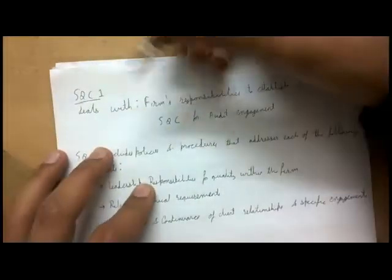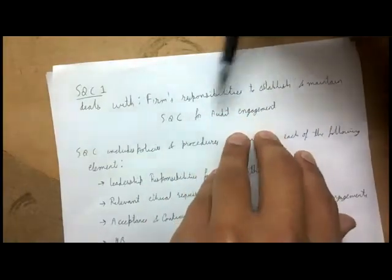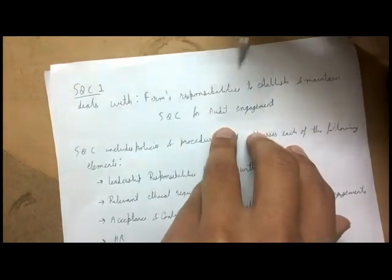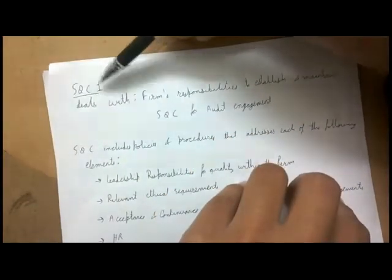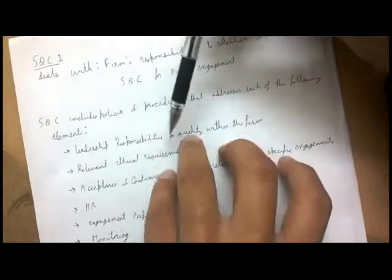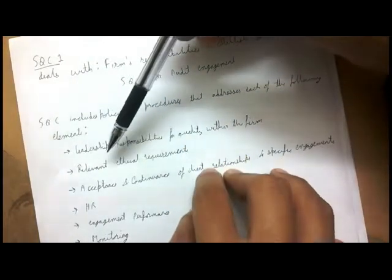Moving on to the system of quality control: it deals with the firm's responsibility to establish and maintain a system of quality control for audit engagements. It was the firm's responsibility to establish and maintain this system. It includes policies and procedures that address each of the following elements: leadership responsibilities for quality within the firm, relevant ethical requirements, and acceptance and continuance of client relationships and specific engagements.